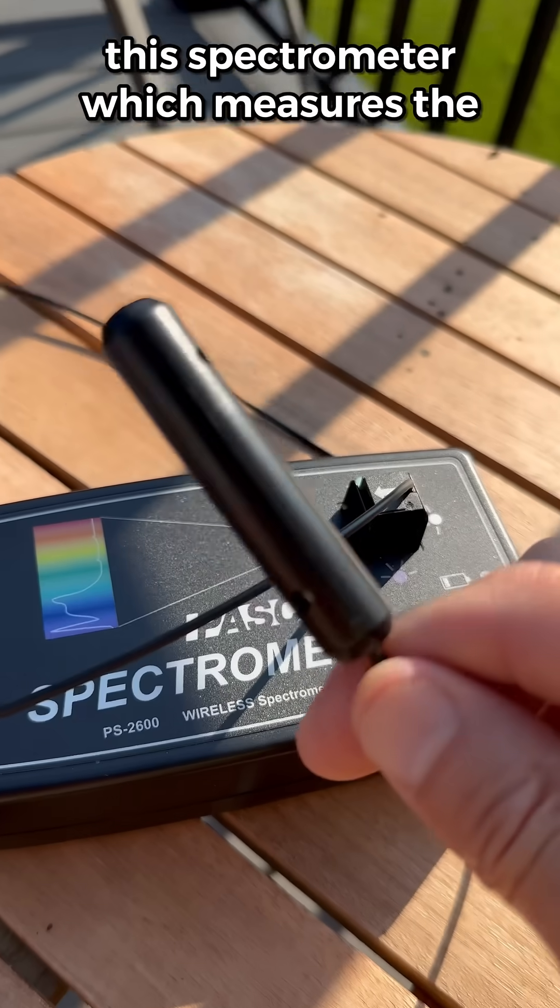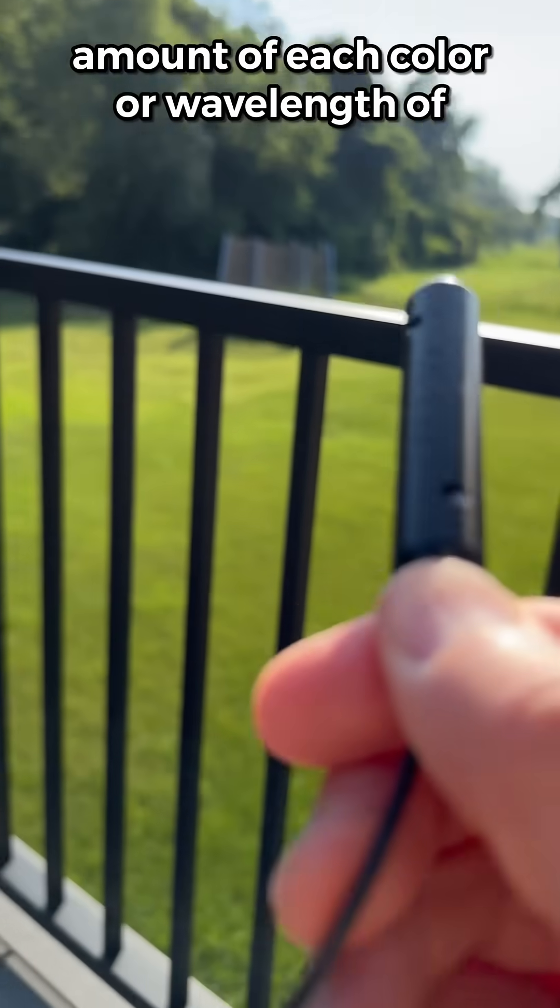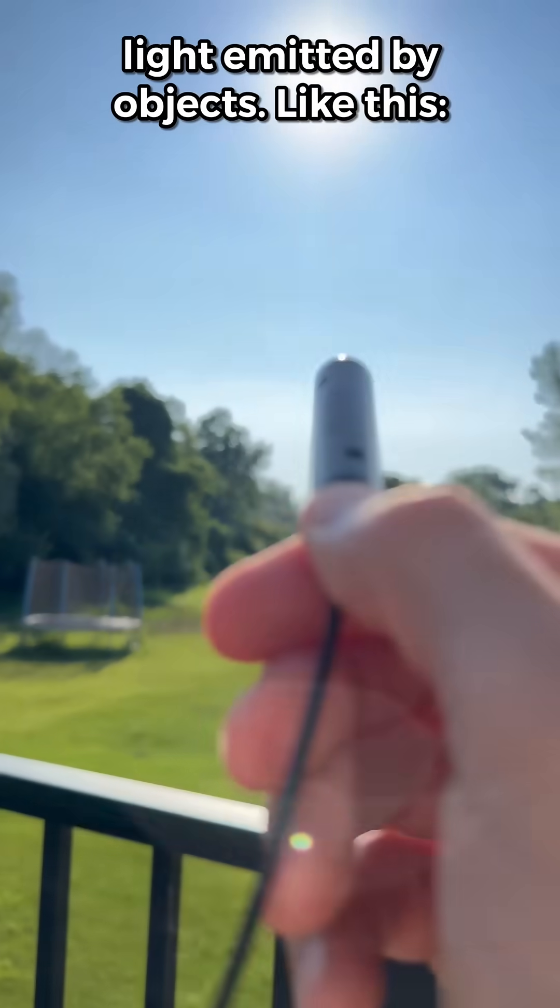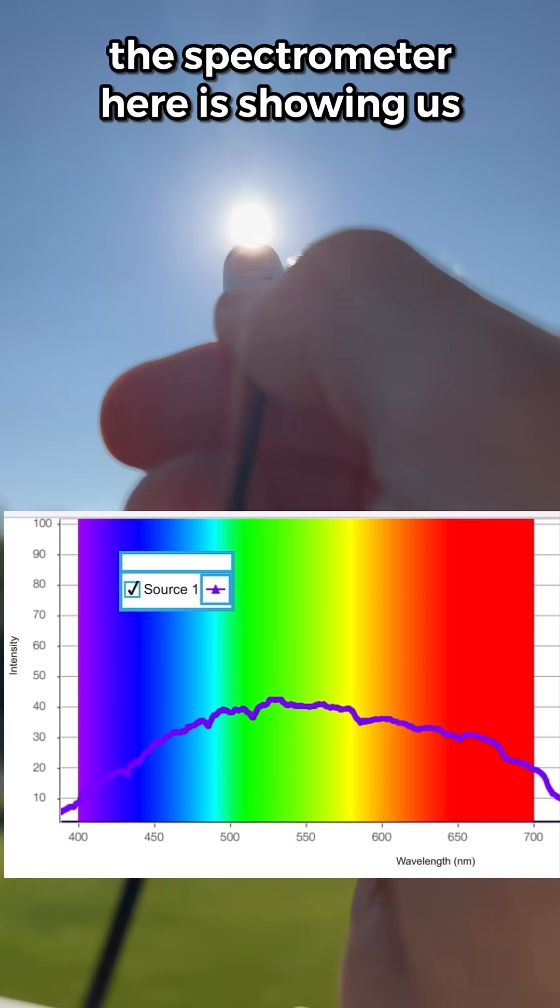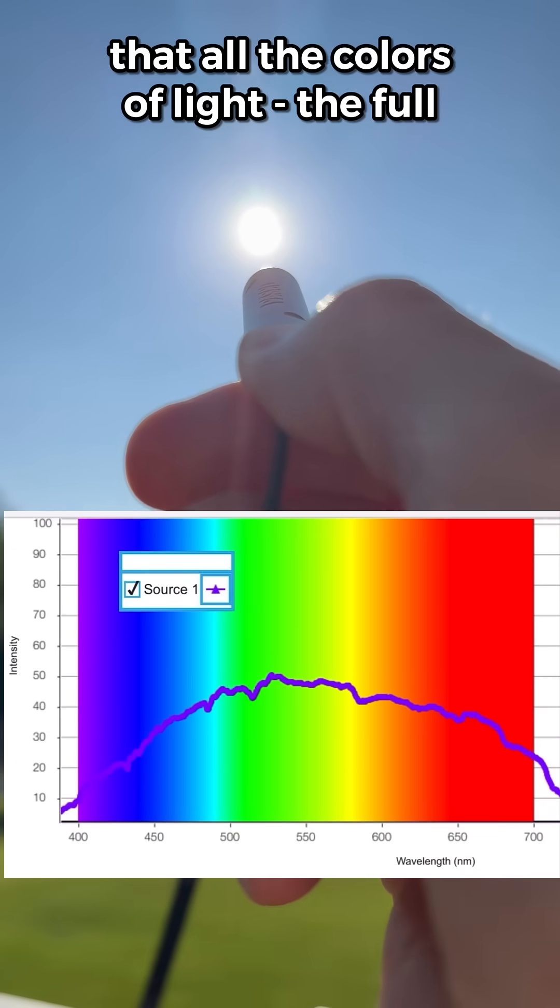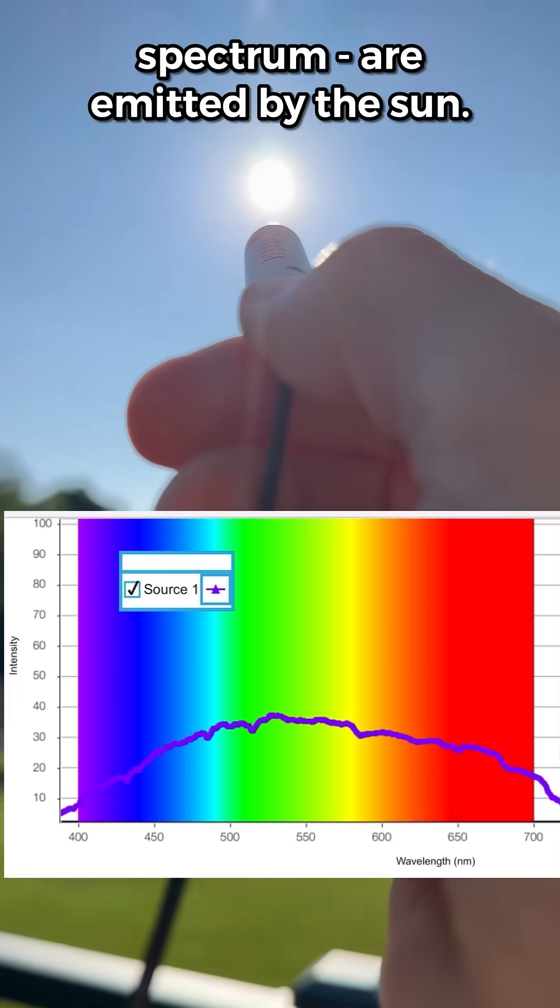I used this spectrometer, which measures the amount of each color or wavelength of light emitted by objects. Like this. The spectrometer here is showing us that all the colors of light, the full spectrum, are emitted by the sun.